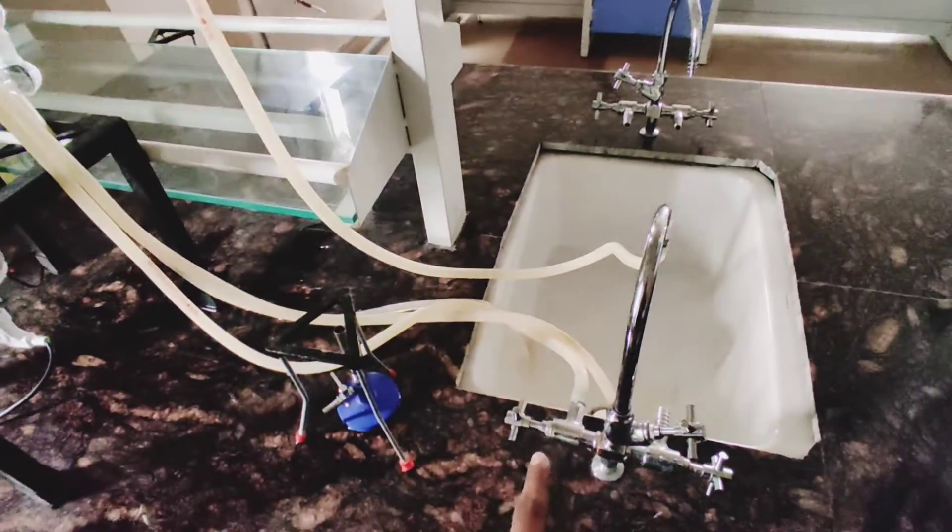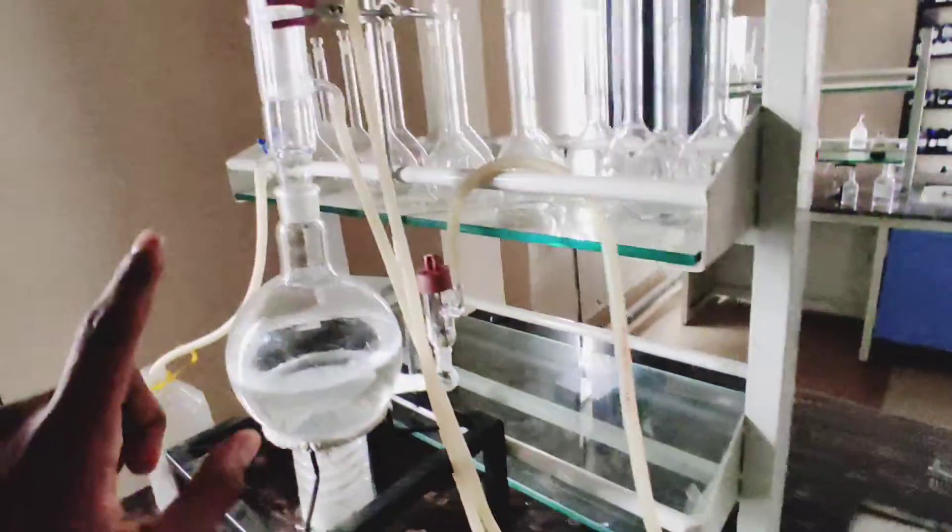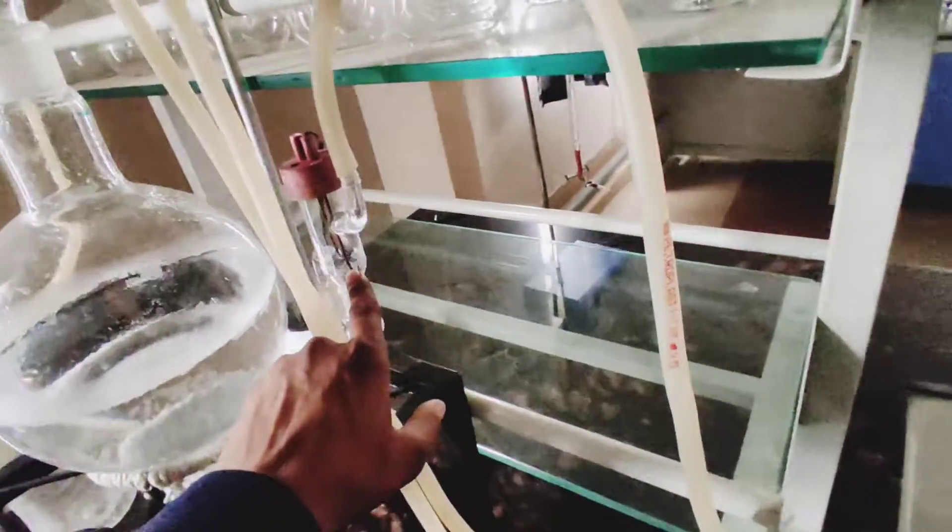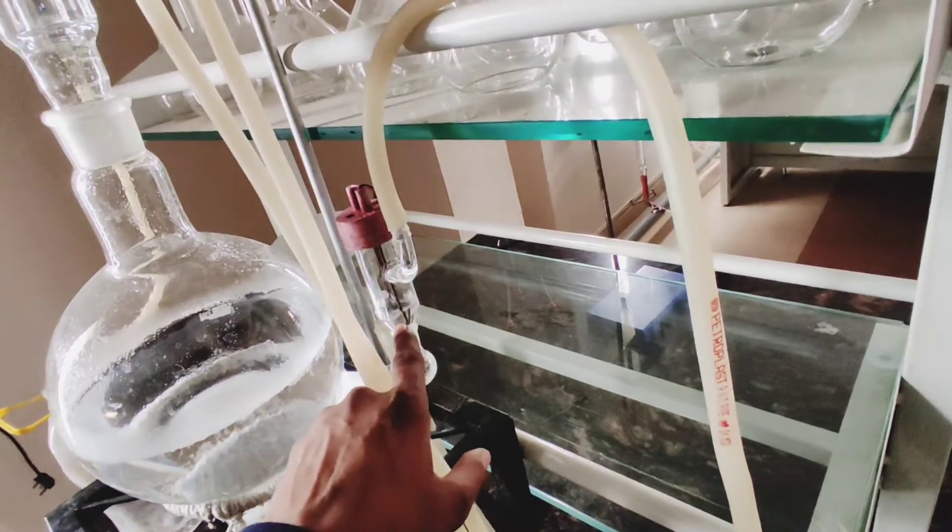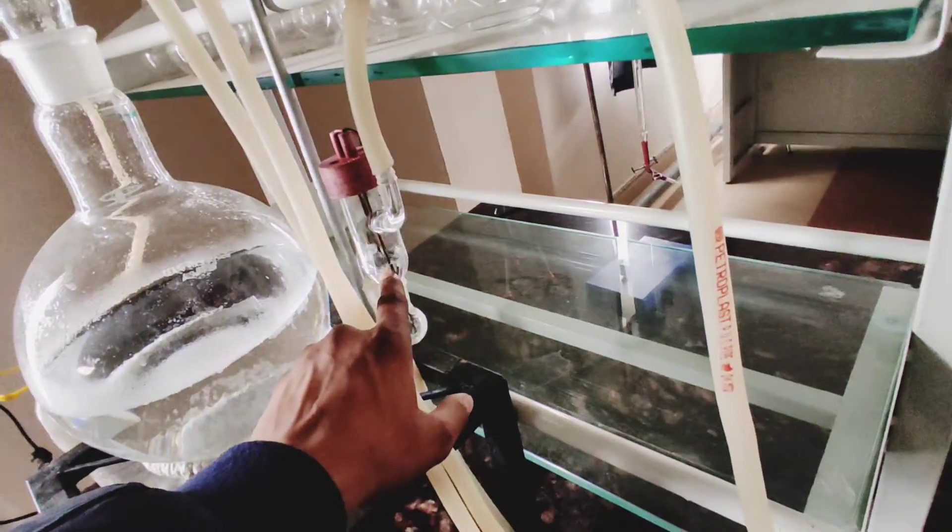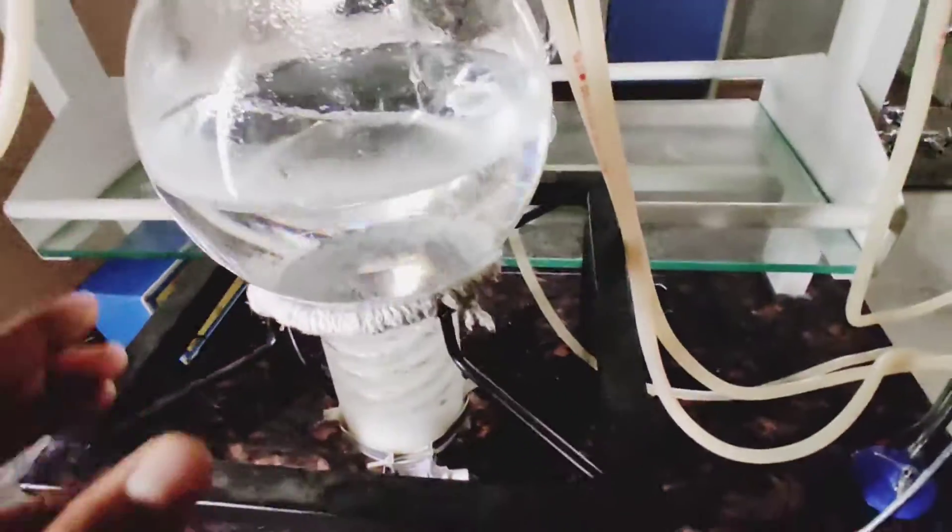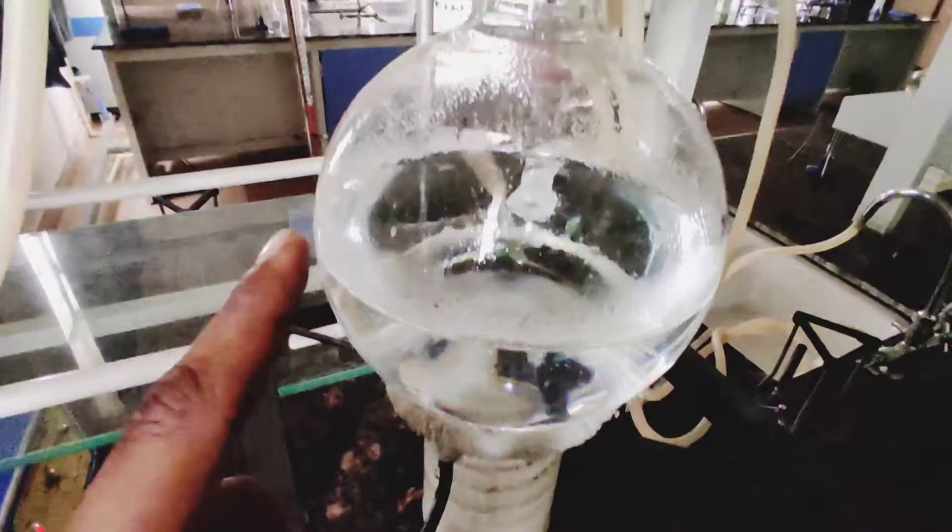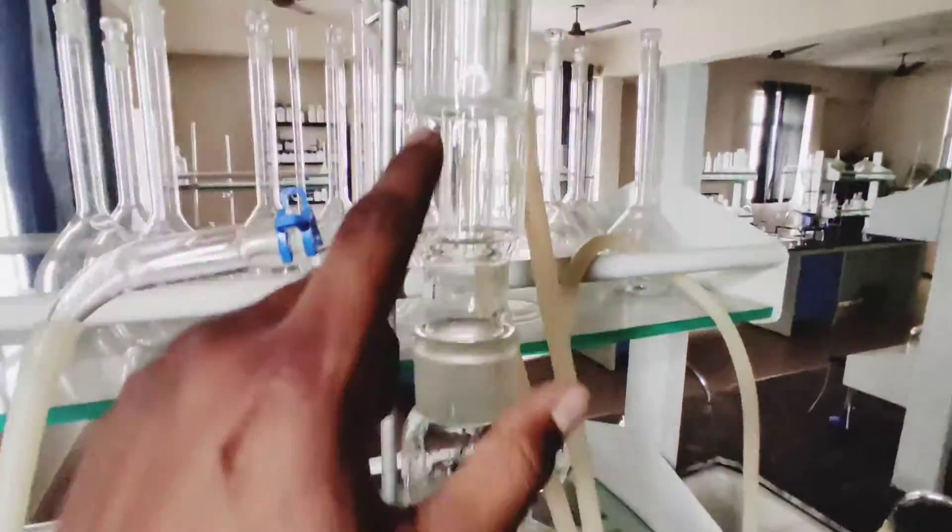So now you are seeing the whole assembly of the distillation process. Here we start the water from here and we put a sensor here. The sensor is activated here. After it activates the water from here, the steam goes up here.